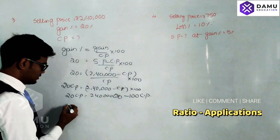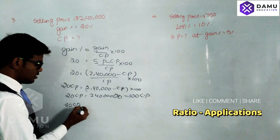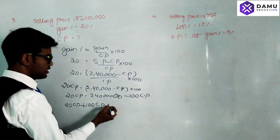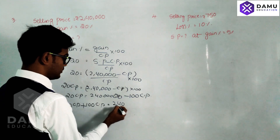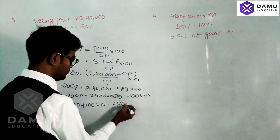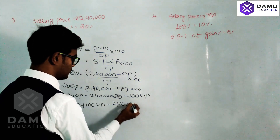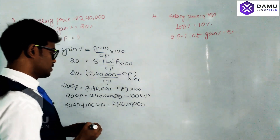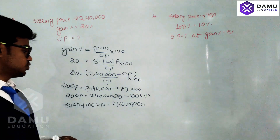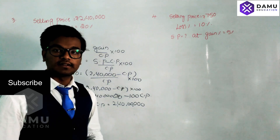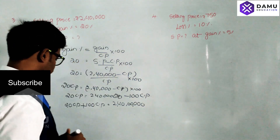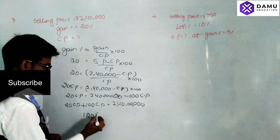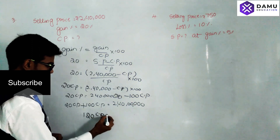Shifting 100 CP to the left side: 20 CP plus 100 CP equals two lakh forty thousand into 100. So 120 CP equals two crore forty lakh.